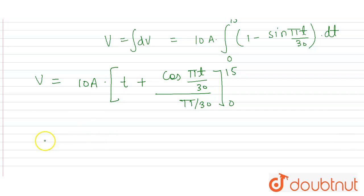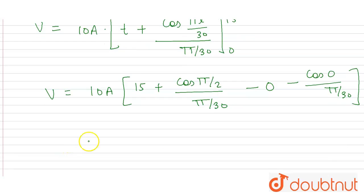Now if we put the value, then v will come out 10A into 15 plus cos pi by 2 divided by pi by 30, minus 0 minus cos 0 divided by pi by 30. This is the limits. Now what will be the value of v? V will come out 10A into 15 minus 30 divided by pi.